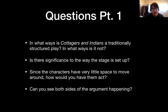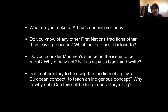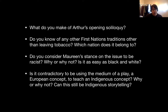In what ways is Cottagers and Indians a traditionally structured play? In what ways is it not? Is there significance to the way the stage is set up? Since the characters have very little space to move around, how would you have them act? Can you see both sides of the argument happening? What do you make of Arthur's opening soliloquy? Do you know of any other First Nations traditions other than leaving tobacco — which nation does it belong to? Do you consider Maureen's stance on the issue to be racist? Why or why not? Is it as easy as black and white? Is it contradictory to be using the medium of a play — a European concept — to teach an Indigenous concept? Why or why not? Can this still be Indigenous storytelling? Those are the questions we'll go over on Monday.